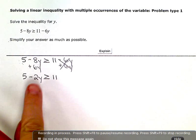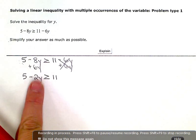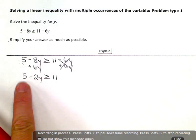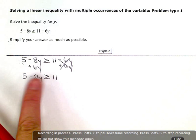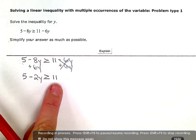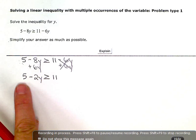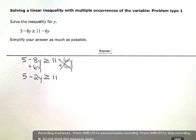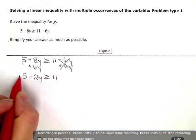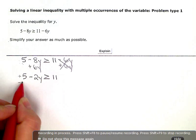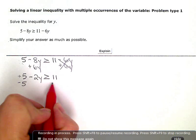Now, I have only one variable term, and it's on the left. But, I have two constant terms, one on each side still. And, I only want constant terms on the right. So, I need to get rid of that one or zero it out. So, this is positive 5 right now. The opposite is to add a negative 5 or subtract 5.